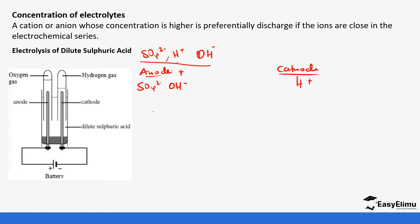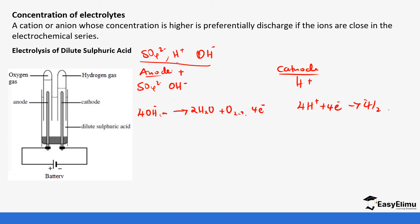Since the solution is dilute, concentration is not going to affect it unless we concentrate it. So between sulfate ions and hydroxide ions, we prefer hydroxide ions because they have a higher tendency of losing electrons than sulfate ions. The equation at the anode: four hydroxide ions discharge to give two molecules of water plus oxygen gas plus four electrons. These electrons travel to the cathode, where four hydrogen ions gain those four electrons to give two molecules of hydrogen gas.